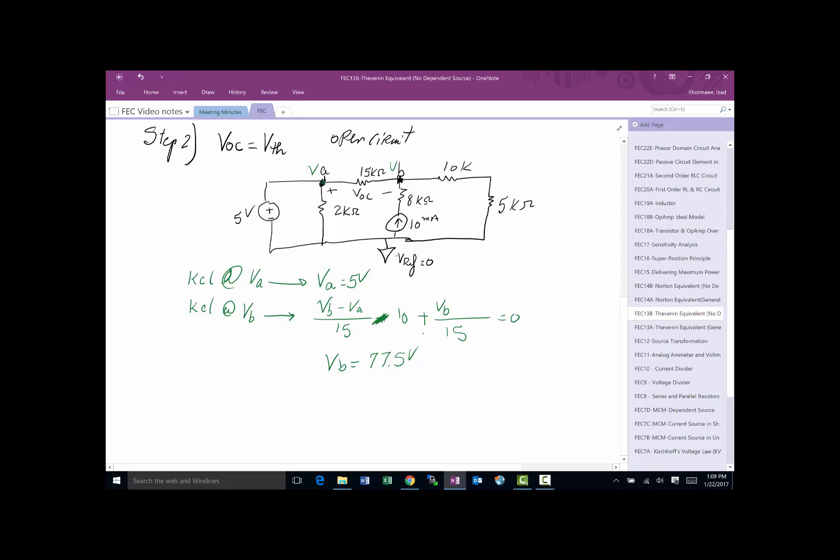That's great. That's not what I'm looking for. I'm looking for V Thevenin. V Thevenin is going to be V across A and B. V across A and B is going to be VA minus VB. I plug the 5 here and 77 here. I'll end up with minus 72 and a half volts. Great.